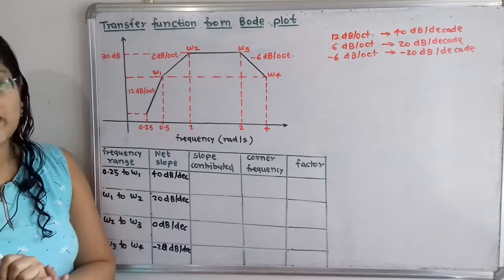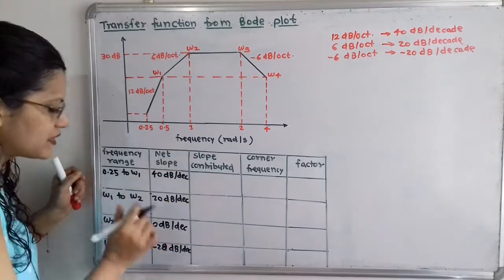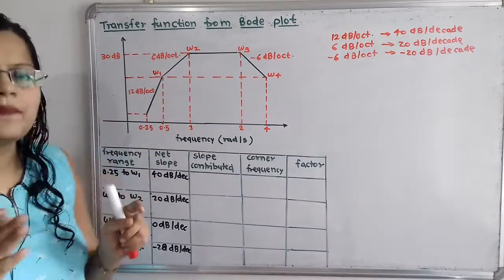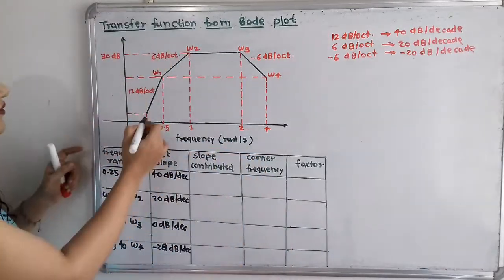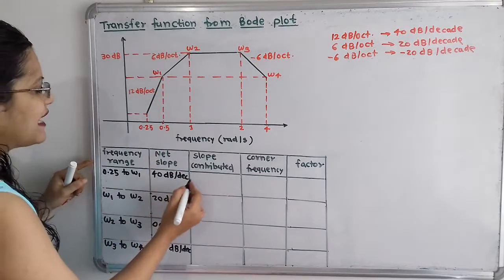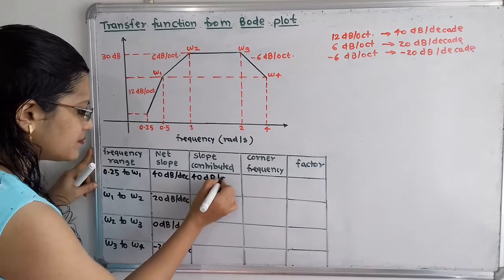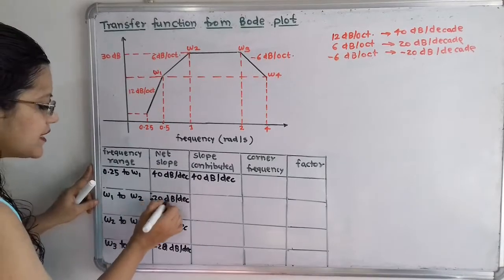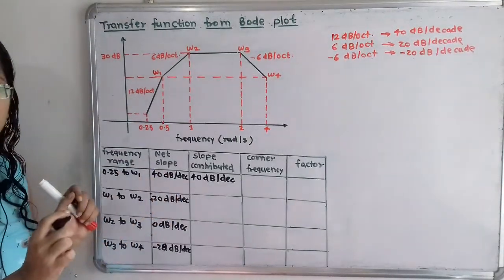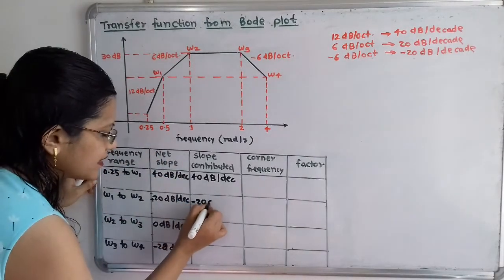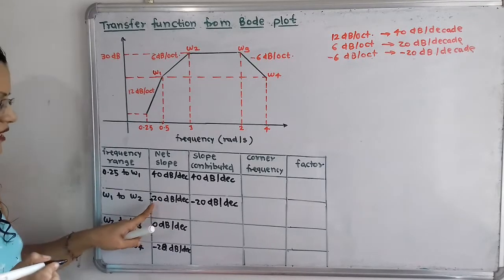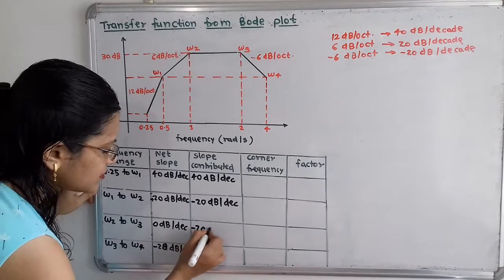Now moving to the third column: slope contributed. For the first frequency range, we take the net slope as it is — 40 dB per decade — because there is no previous slope to subtract. For the next range, slope contributed is plus 20 minus 40, which equals minus 20 dB per decade. For omega 2 to omega 3, it is 0 minus 20, again minus 20 dB per decade.